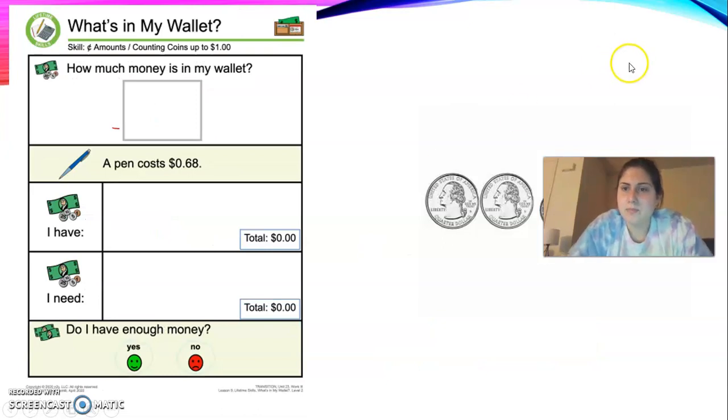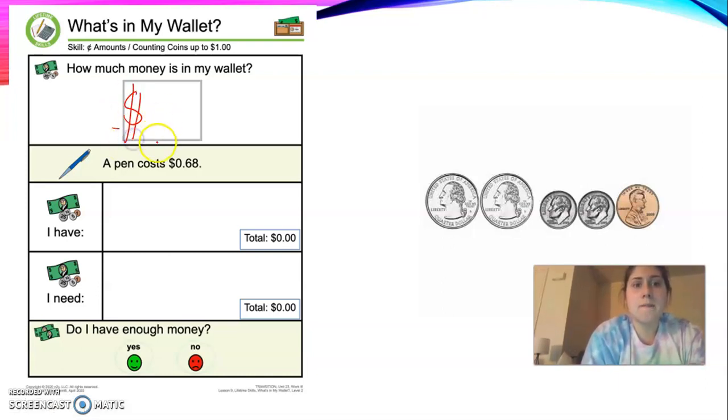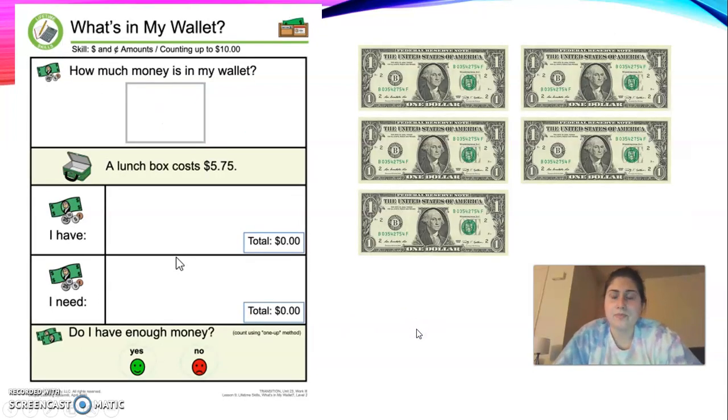Next up, and again, the coins are on my video. Next up, we have coins again. Again, remember that we're going to put our dollar sign and a zero with a decimal point and then get ready to write our change in. You're going to do that for I have as well. A pen costs 68 cents. So how much money do you need? Circle it in our sentence and copy it down here. Do you have enough money? Only you can decide that. We'll see what you put. All right.